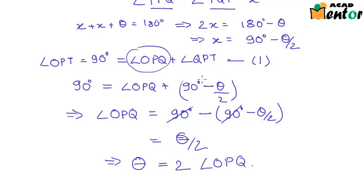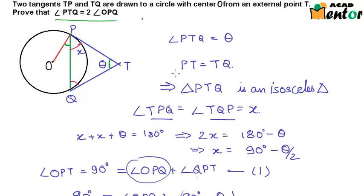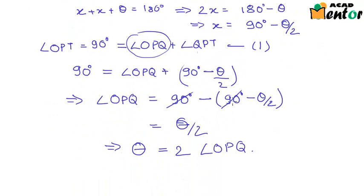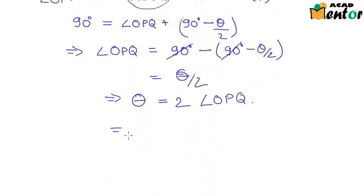Now what was θ? θ was angle PTQ, this one. If I just replace the value of θ, I would have angle PTQ = 2 times angle OPQ. And this was what was to be proven.